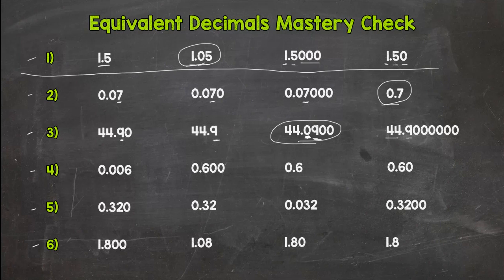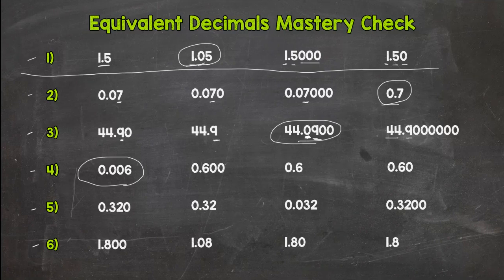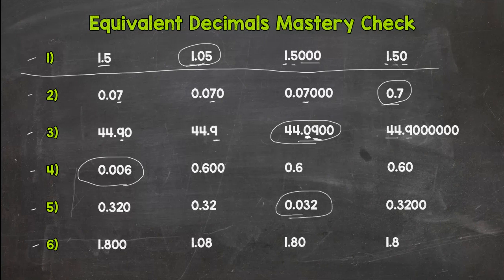Number four, let's see. We have a bunch of sixes and zeros. It's this first one that does not fit because of the six in the thousandths, so the rest have a six in the tenths. Number five, we have threes and twos, and the one that does not fit is 0.032, 32 thousandths. The rest has a three in the tenths and the two in the hundredths.